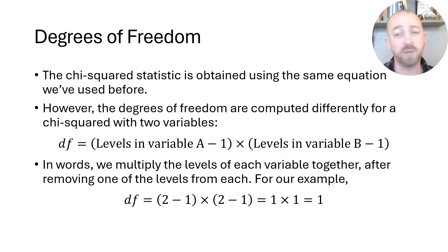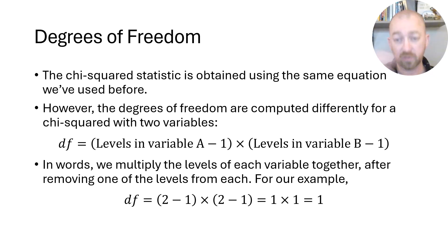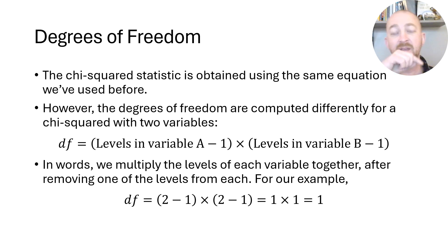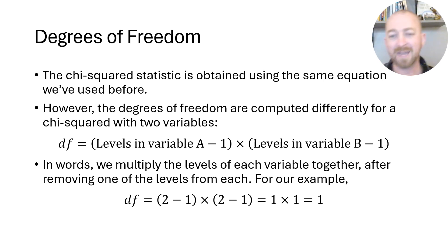If you had a two-by-three chi-squared design, you would end up with two degrees of freedom, because two minus one times three minus one is one times two, which equals two.